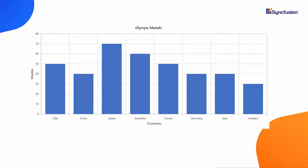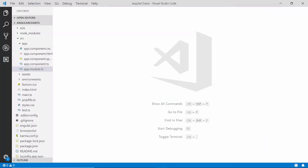Now let me show you how to write code to achieve these scenarios using my existing application. As I have already explained how to add a simple Angular chart of Syncfusion to the application, please refer to my getting started video for the basic steps — you can find its reference link in the description below. First let me open my existing application and start adding the column series chart to it.